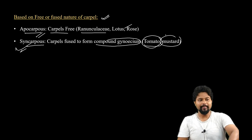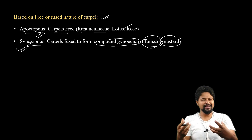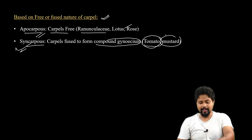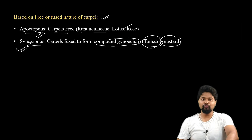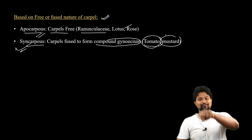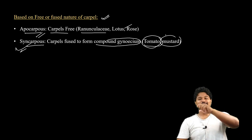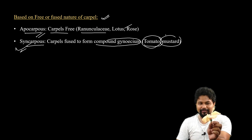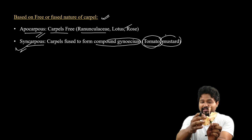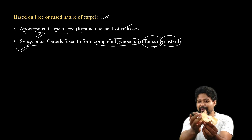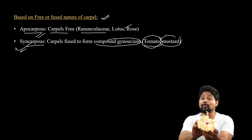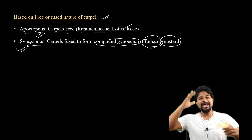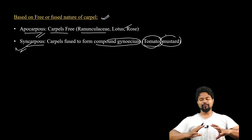So this was all about carpels — the classification and naming is done. In the next class, we will discuss fruit. A fruit develops from the ovary inside the flower after fertilization takes place. We will discuss in detail how the ovary develops into fruit.